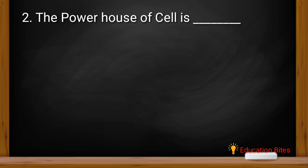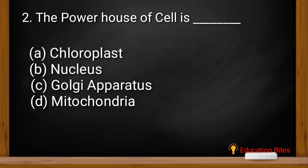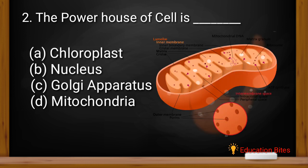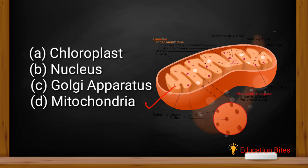The next question is, the powerhouse of the cell is? Powerhouse of cell is called chloroplast, nucleus, golgi apparatus or mitochondria. So the correct option is D, that is mitochondria, because ATP production happens here.